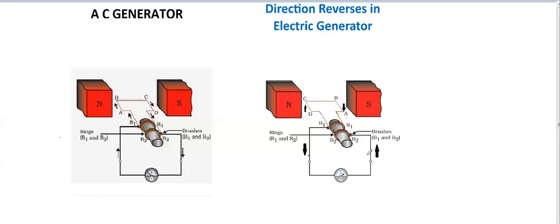So here we can see that after half rotation, the direction of induced current is reversed. This type of current which changes its direction after every half rotation is called alternating current. The generator which produces alternating current is called alternating current generator or AC generator.